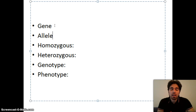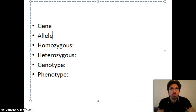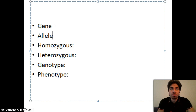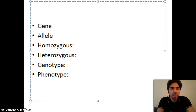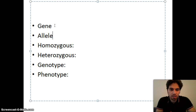Allele: alleles are different forms of a gene. So if the gene is eye color, the alleles could be blue eye color, green eye color, brown eye color, etc. We may have many alleles for each gene, but every single person has two alleles for each gene because we have pairs of chromosomes. Two alleles govern one gene.